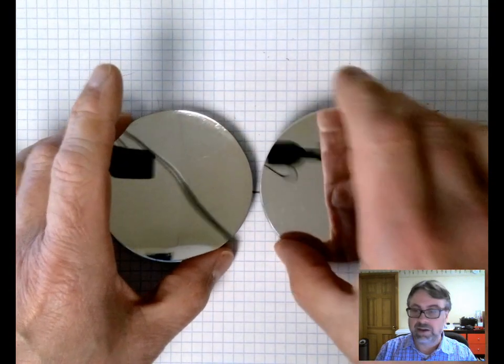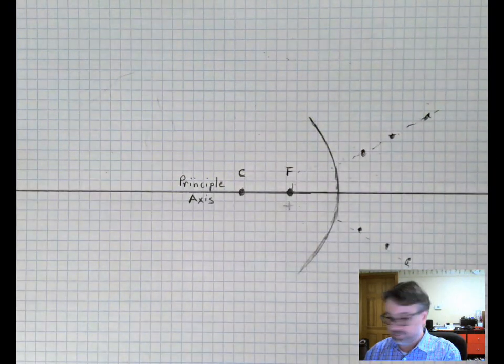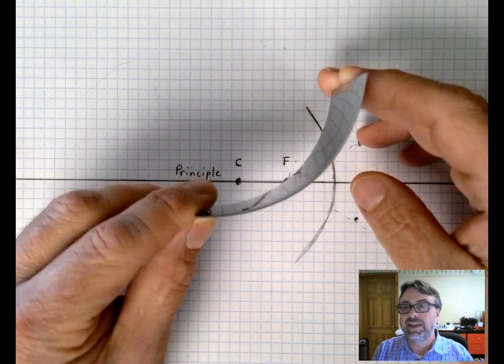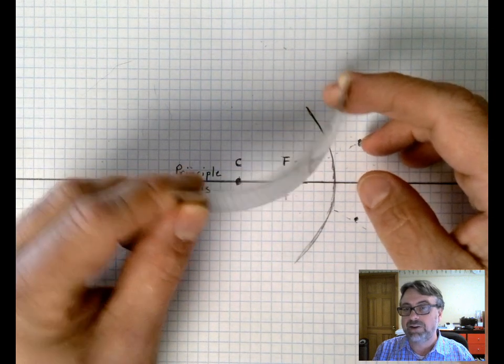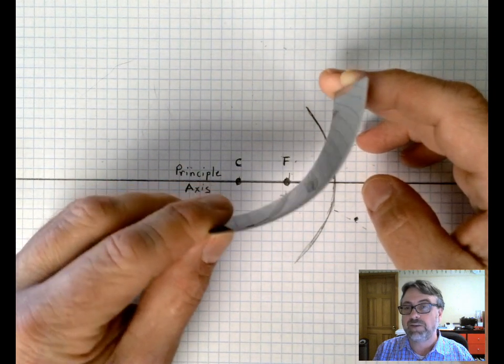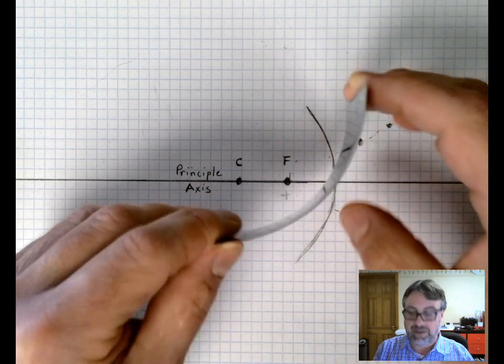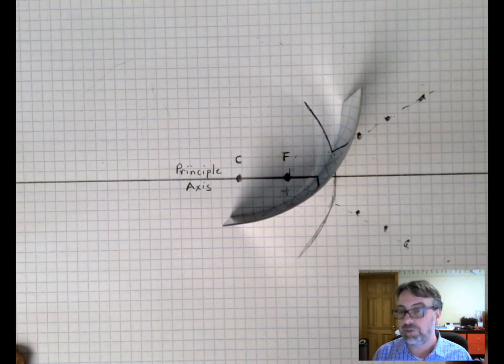But I have another type of circular mirror. This mirror here is not quite spherical but it has the advantage of being a partially circular mirror and it will hold itself up on a piece of paper.